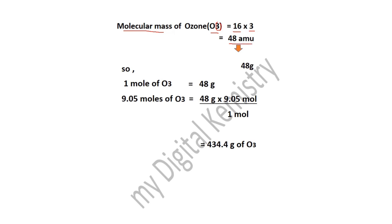جیسے ہم amu unit کو replace کر دیتے ہیں گرام سے تو یہ ہمارے پاس ہو جاتا ہے 48 grams اور یہ equal ہے ہمارے پاس 1 mol کے۔ So 1 mol of ozone کا mass ہوتا ہے 48 grams. Find out کرنا ہے ہم نے 9.05 mols of ozone کا کیا mass ہوگا۔